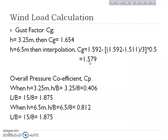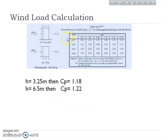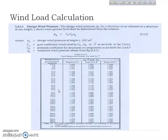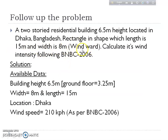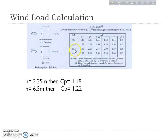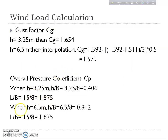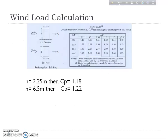For the overall pressure coefficient CP, we need the ratios h/b and l/b using this chart. Here b is the bay spacing (windward width = 8 meters). For h = 3.25 meters: h/b = 3.25/8 = 0.406 and l/b = 15/8 = 1.875. For h = 6.5 meters: h/b = 6.5/8 = 0.812 and l/b = 1.875.